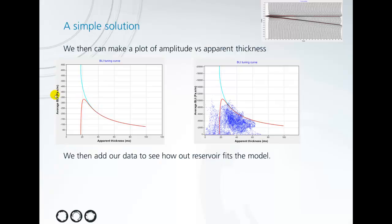In this example we have a plot of amplitude or band-limited impedance against thickness, which comes directly from our tuning wedge. So here we can play around a bit with different types of tuning wedges to see what the effect of varying the thickness is against the amplitude. We can then also add our data to this plot to calibrate the model.